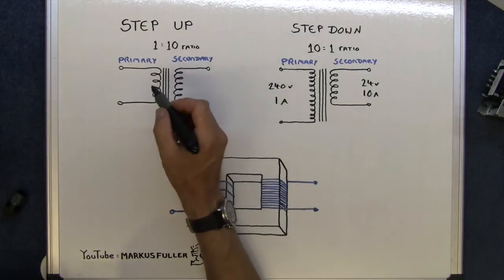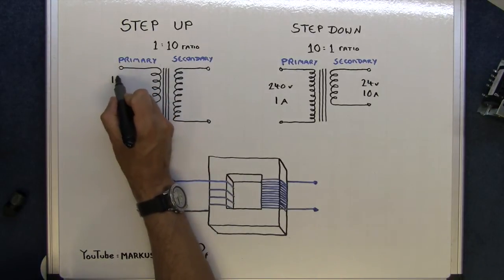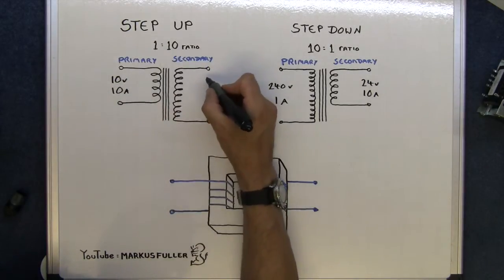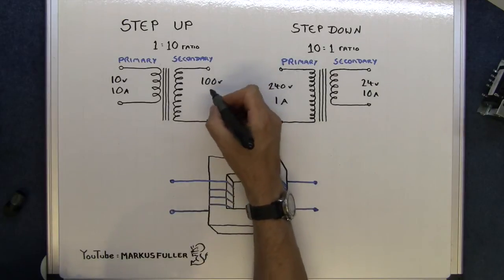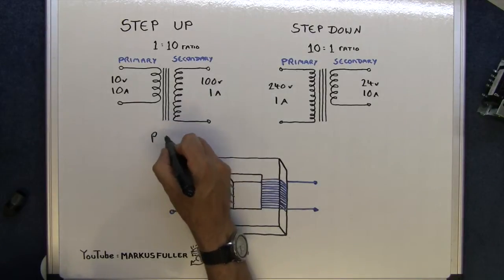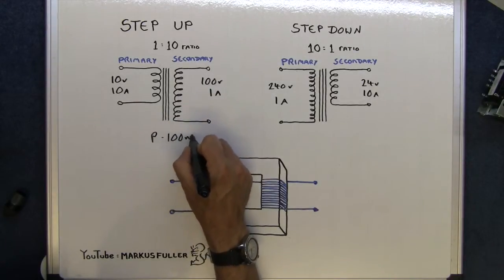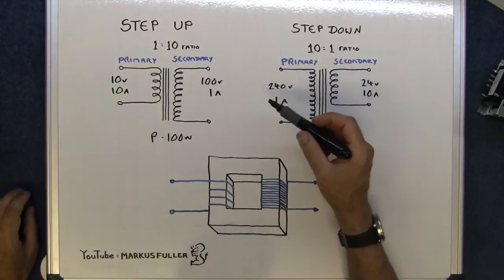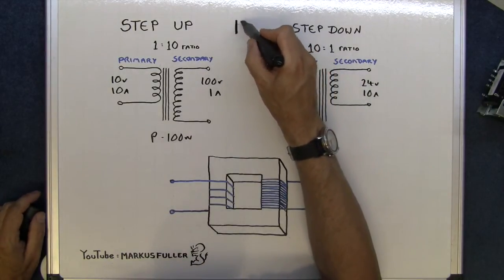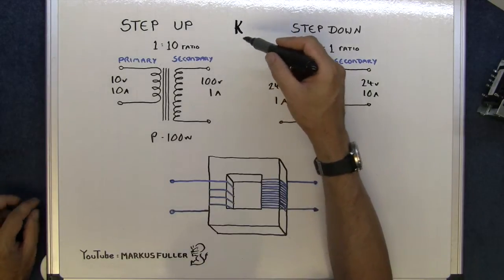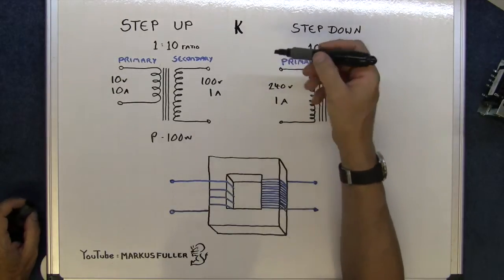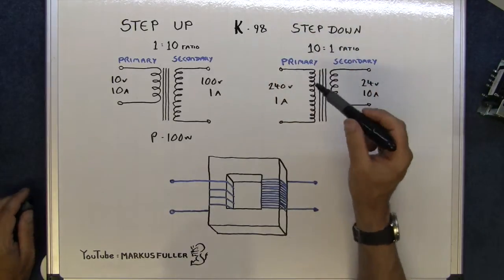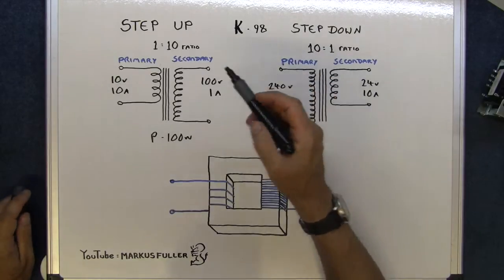Now on a step up transformer, say you have, to make it simple, 10 volts going in at 10 amps, and it's a 1 to 10 ratio, then this side you will have 100 volts but only one amp. That's a power factor of 100 watts. That's an ideal transformer. There's no such thing as an ideal transformer with 100% efficiency. Normally the efficiency of a transformer is k, which is a measure of the degree of coupling between the primary and secondary coils of a transformer. And the best you can achieve at the moment is about 0.98. So if you put 100 volts in you'll get 98 volts out the other side if it's a one to one transformer.